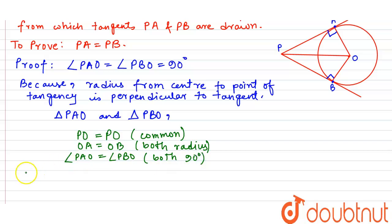Hence by RHS criterion, triangle PAO is congruent to triangle PBO.